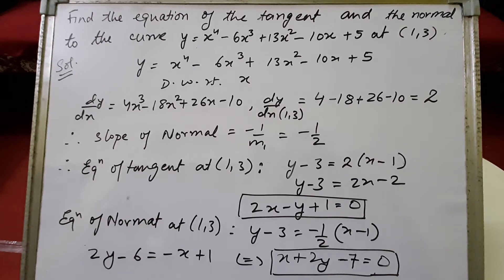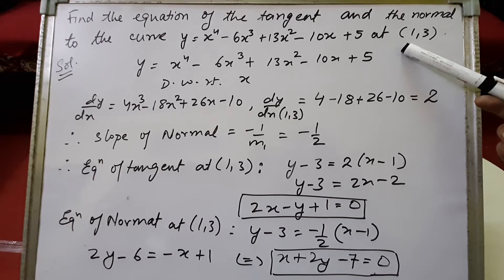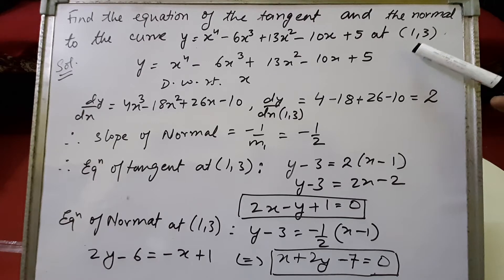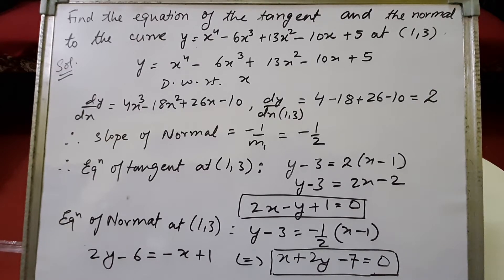It is given that: find the equation of the tangent and the normal to the curve. The equation of the curve is given as y equals 2x to the power 4 minus 6x cubed plus 13x squared minus 10x plus 5, at the point (1, 3). That means at this point, we have to find the equation of the tangent and the equation of the normal.